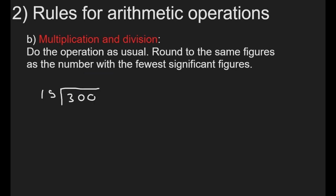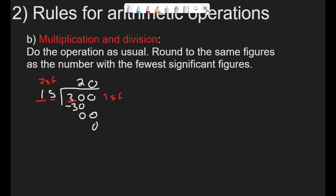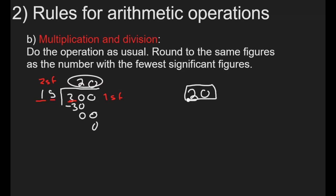Now let's do a division: 300 divided by 15 equals 20. To decide the number of significant figures, 300 has one significant figure and 15 has two significant figures. Therefore, my answer will have just one significant figure — 20 already has one significant figure, so that is my final answer.